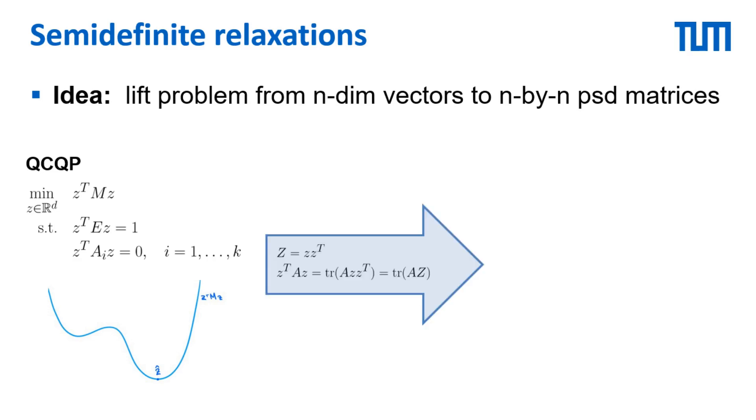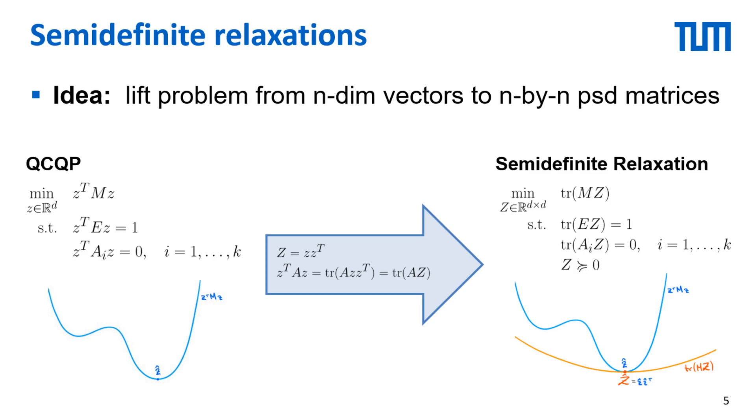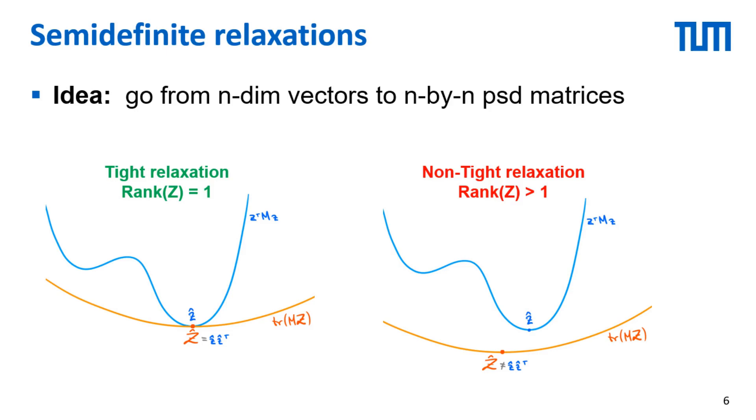To relax the problem we introduce a new matrix variable capital C equal to CC transpose. This lets us reformulate the problem as a semi-definite program which has the advantage of being convex and can be solved efficiently with existing solvers. If the solution to the semi-definite program is rank 1, we can recover the global optimum of the original problem via a singular value decomposition, in which case we say that the relaxation is tight.